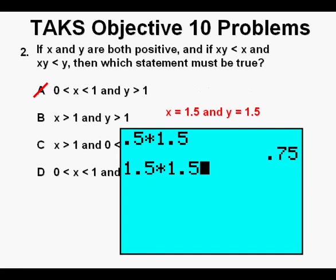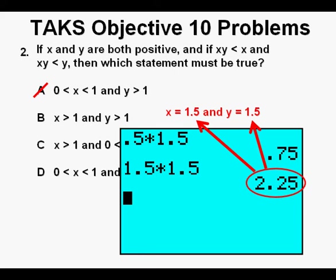For answer B, where both X and Y are greater than 1, we'll let both X and Y be 1.5. So we multiply 1.5 by 1.5. Press Enter. We get 2.25, and this number is greater than both X and Y. So we cross off answer B as well.